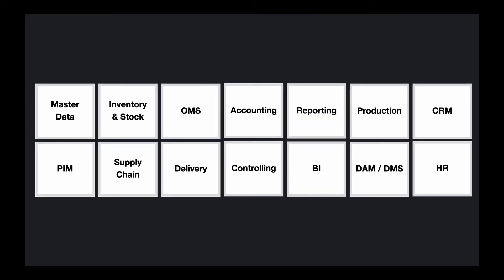Here we can see an overview of typical features that a modern ERP system can contain. It manages the master data of a product like the SKU or the name, the stock, orders in the order management system, accounting and generating invoices, reporting, managing and planning production, customer data in the CRM, further product information in the PIM, the supply chain, delivery and delivery status, controlling, business intelligence, document and asset management, and human resources.